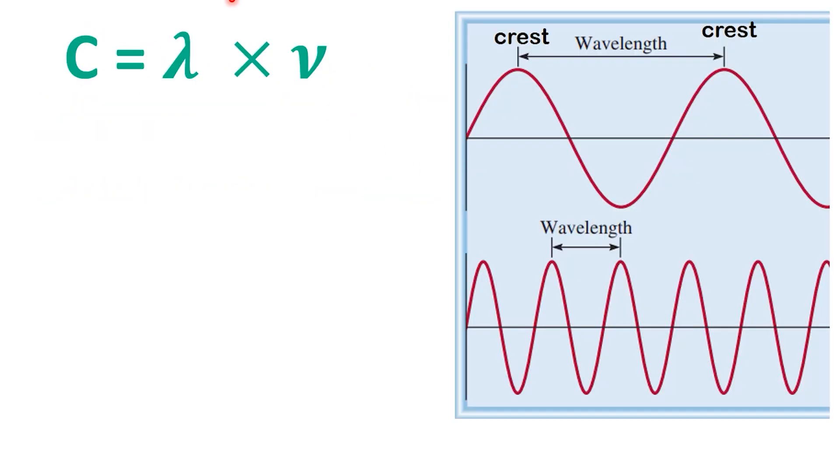The relationship between wavelength, frequency, and the speed of light is expressed by the equation C equals lambda times nu. Here's what each symbol means. C is the speed of light in a vacuum. Its value is 3 times 10 to the power of 8 meters per second.